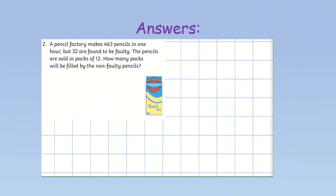Let's take a look now at question 2. We have 463 pencils made in one hour. But, 32 of them are faulty. We are not going to count the faulty pencils are we? Because it says how many packs will be filled with the non-faulty pencils. So, that means we need to do a subtraction. We need to take away the faulty pencils to see how many pencils we can share. 3 take away 2 is 1, 6 take away 3 is 3 and 4, we now have 431 pencils.